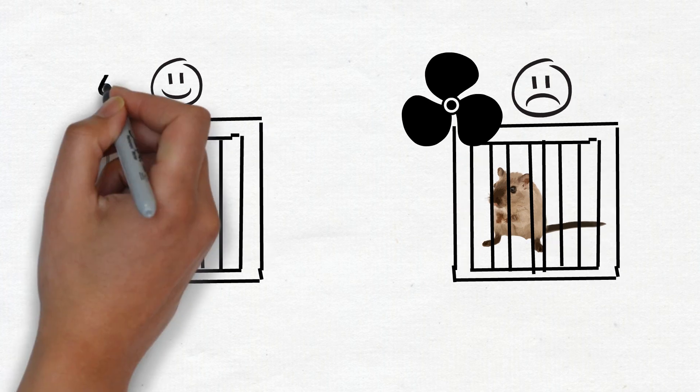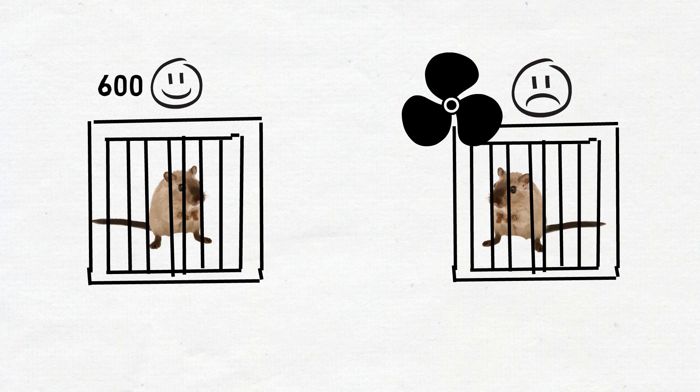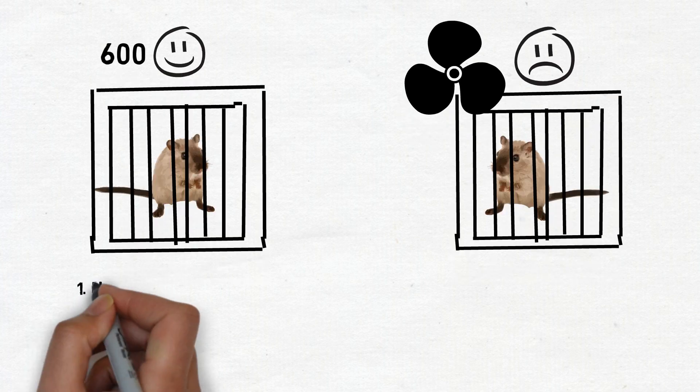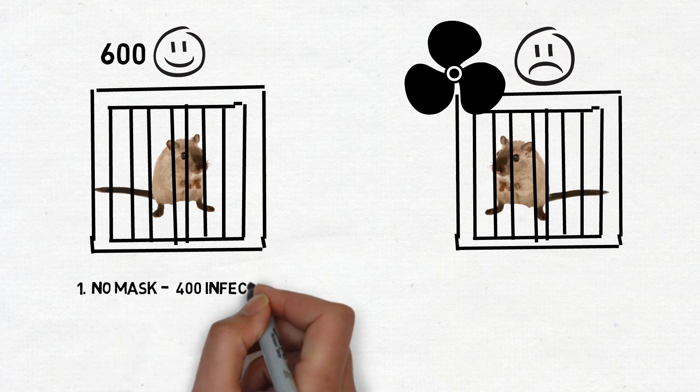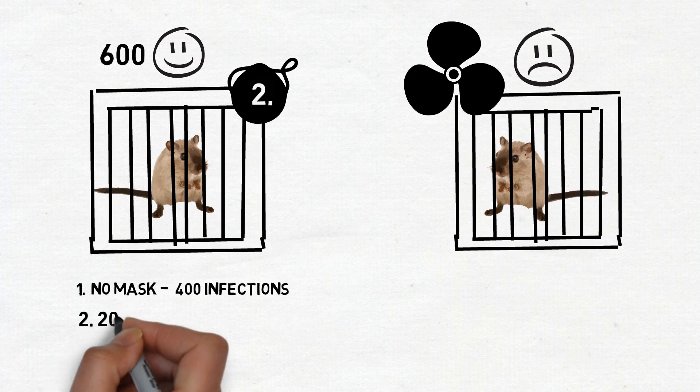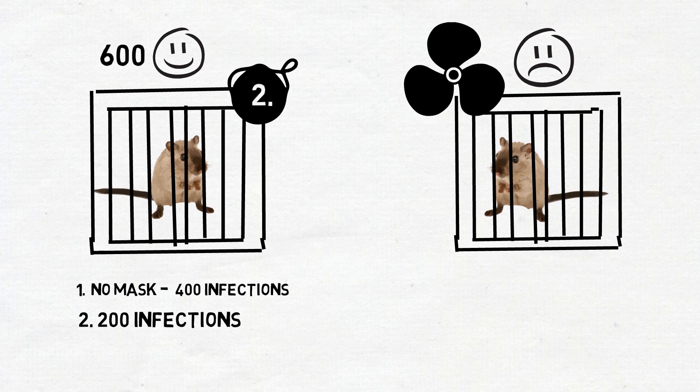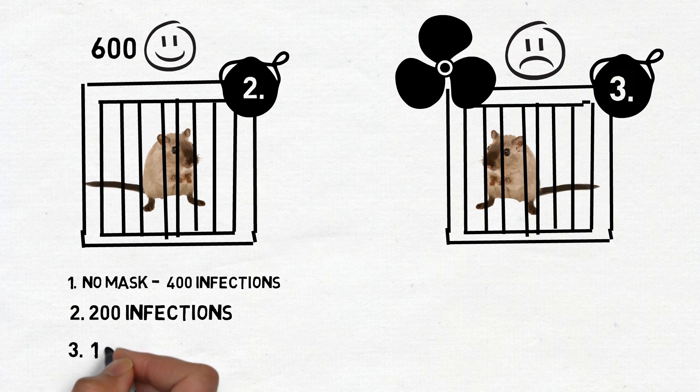To make the math simple, let us assume there were 600 healthy hamsters. With no mask in between, 400 of the healthy hamsters were infected within a week. With a mask close to the healthy hamsters, 200 hamsters were infected. This scenario is similar to healthy people wearing masks. But with the mask close to infected hamsters, only 100 hamsters got infected. This scenario is similar to an infected person wearing a mask.